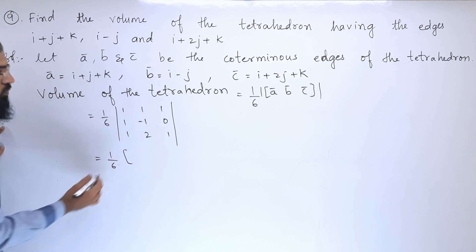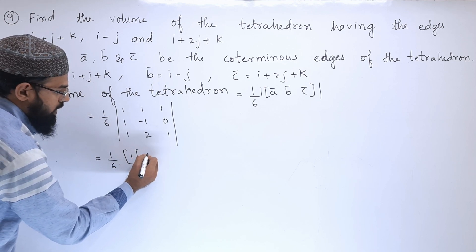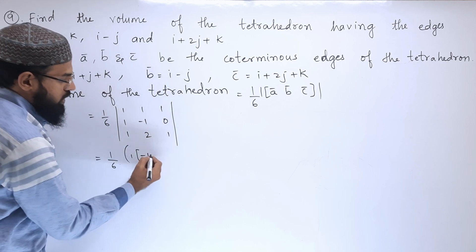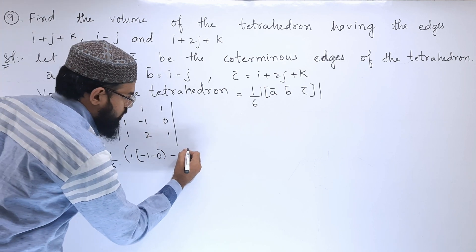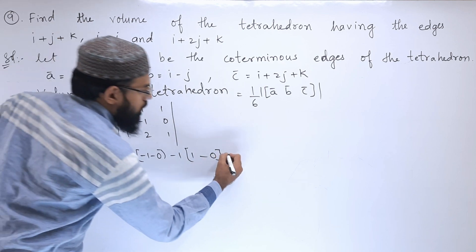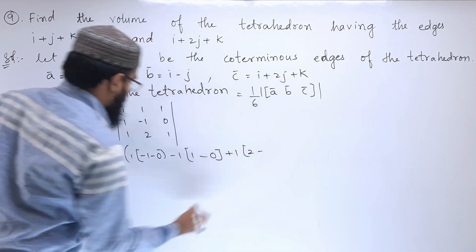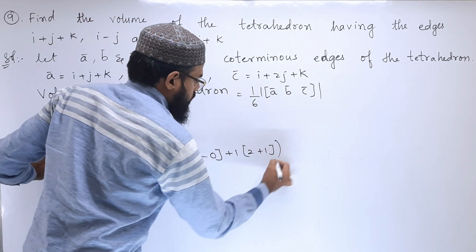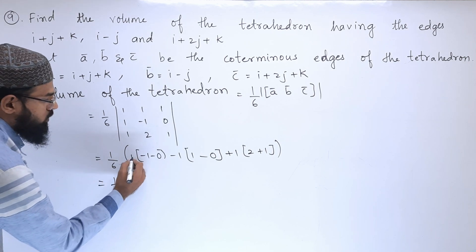Expanding the determinant: 1/6 times 1 times ((-1)(1) minus (0)(2)) minus 1 times ((1)(1) minus (0)(1)) plus 1 times ((1)(2) minus (-1)(1)). This gives: minus 1 minus 0, then 1 times (2 plus 1), and the last minor gives minus 1.